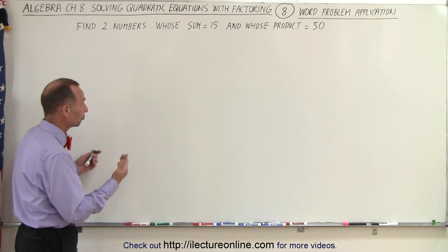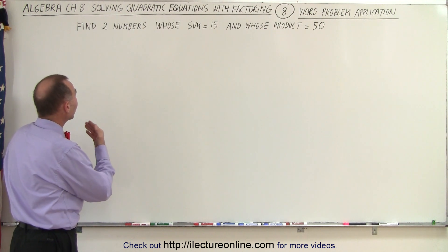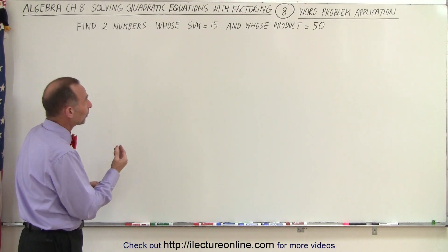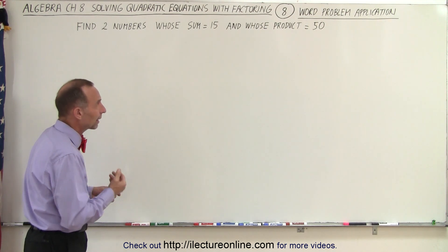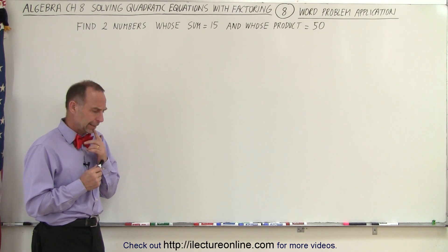And our first example is the following. Find two numbers whose sum add up to 15 and whose product are equal to 50. Let's see here.